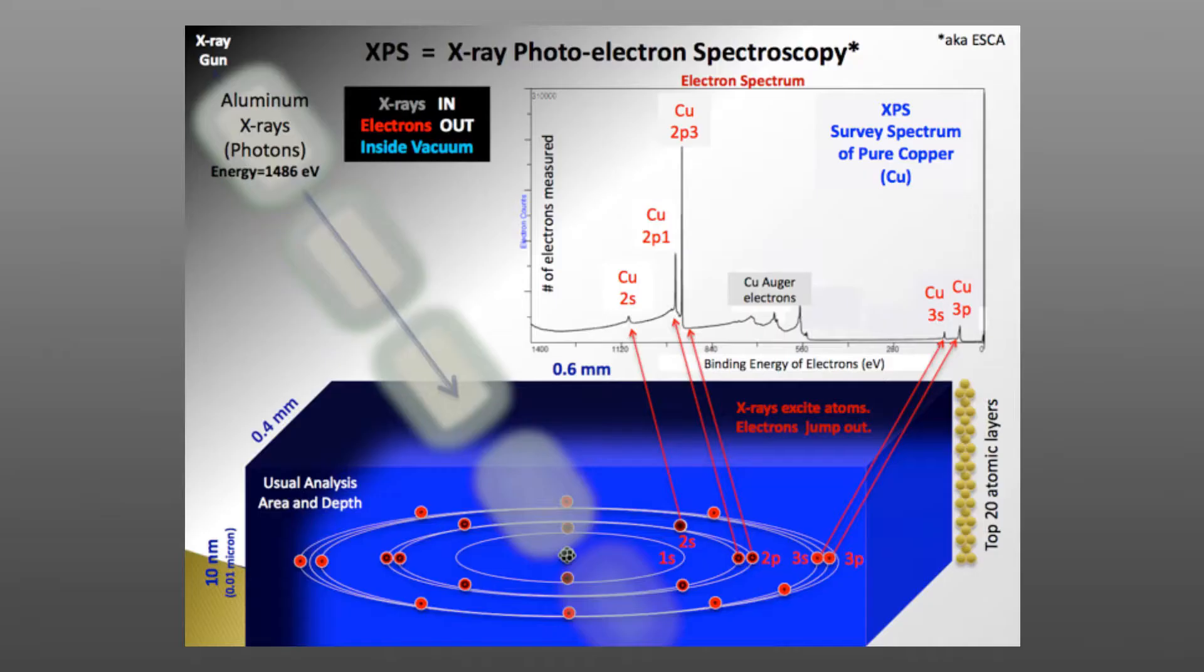XPS is a complement to other materials characterization techniques. XPS provides this surface chemical state of a sample. Many other techniques are more bulk analysis. It's important to combine both bulk and surface information in order to understand what's going on with your material.